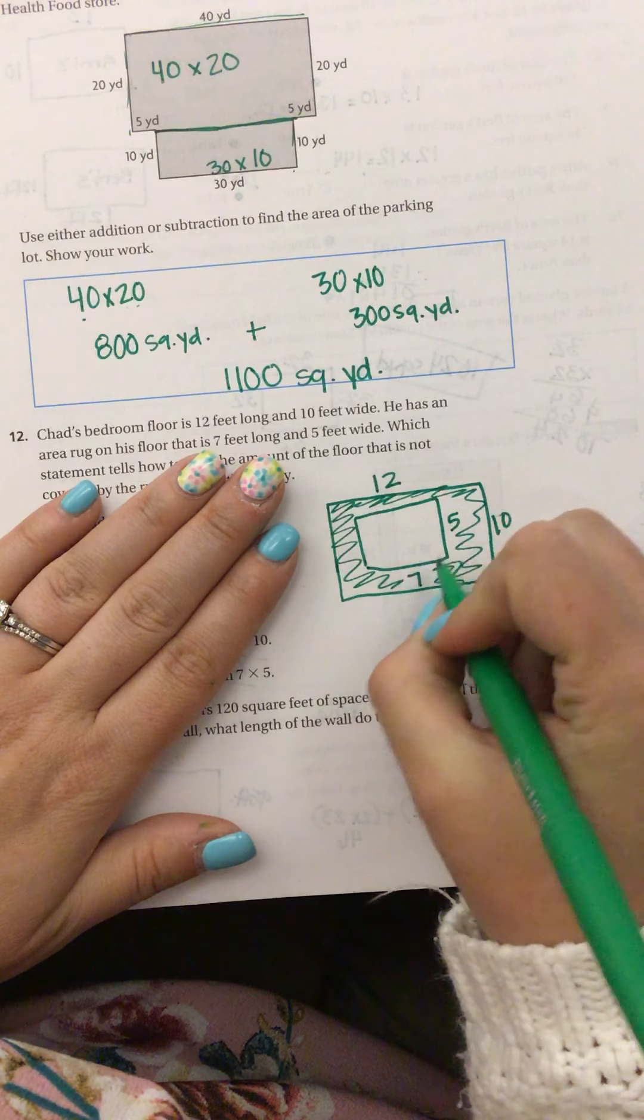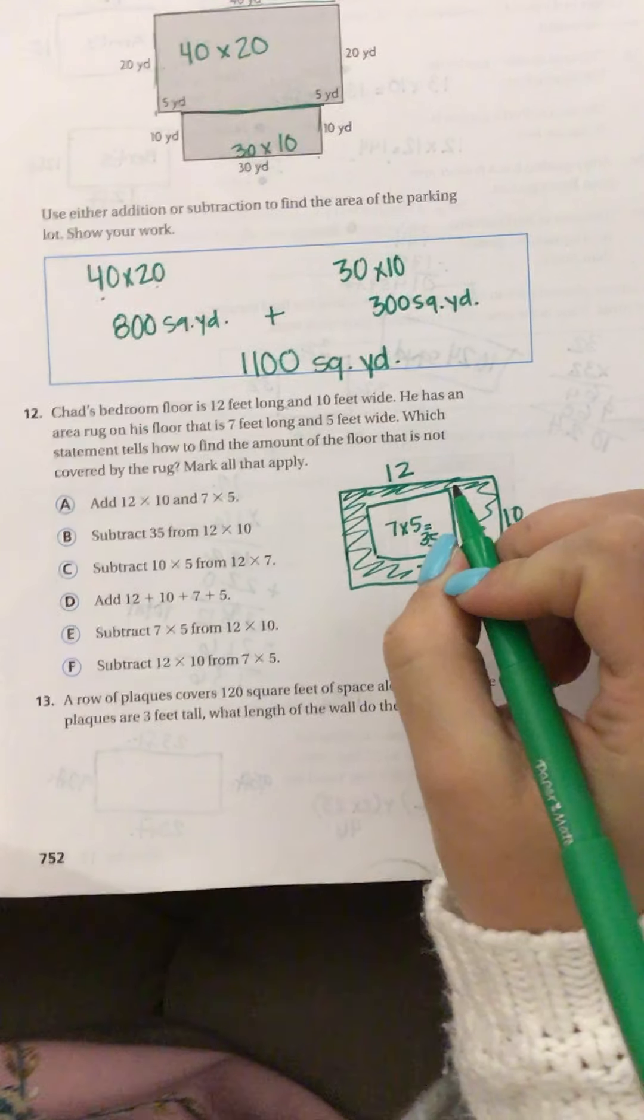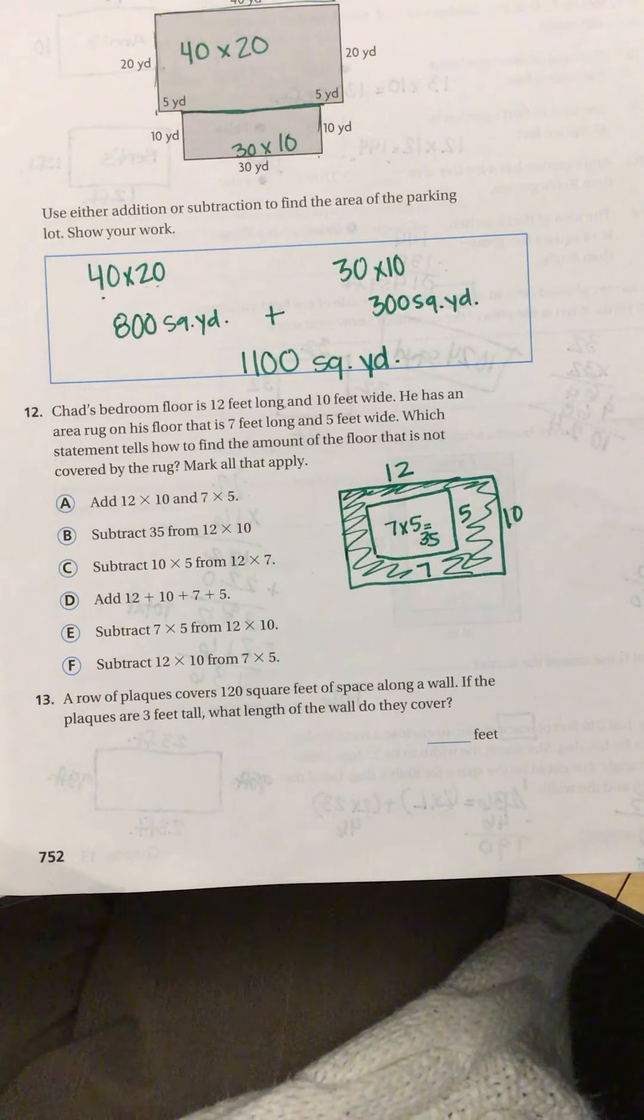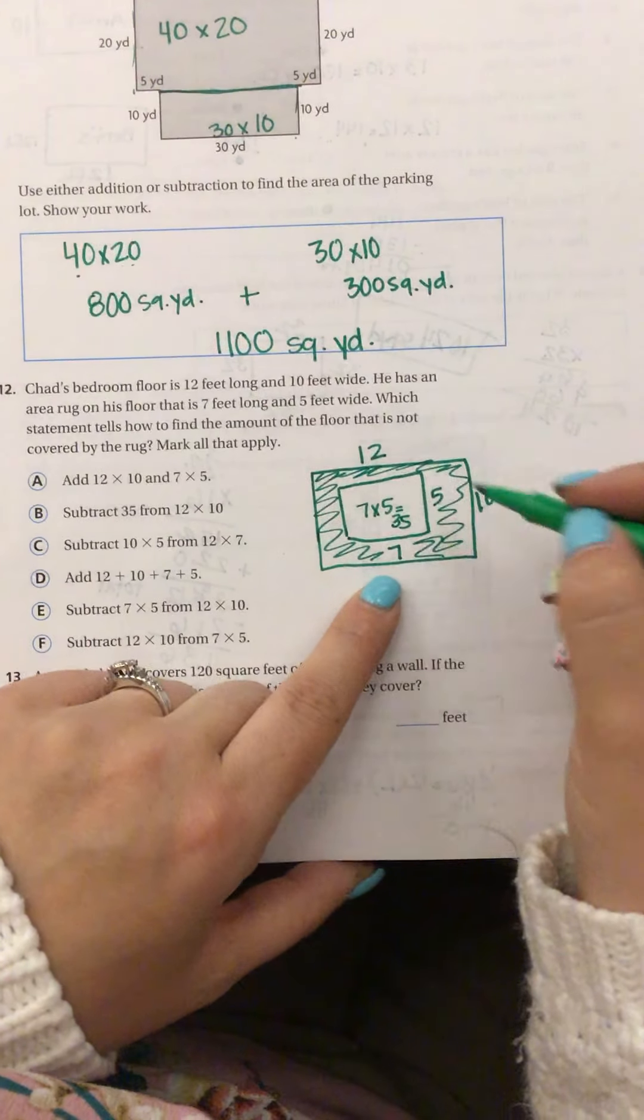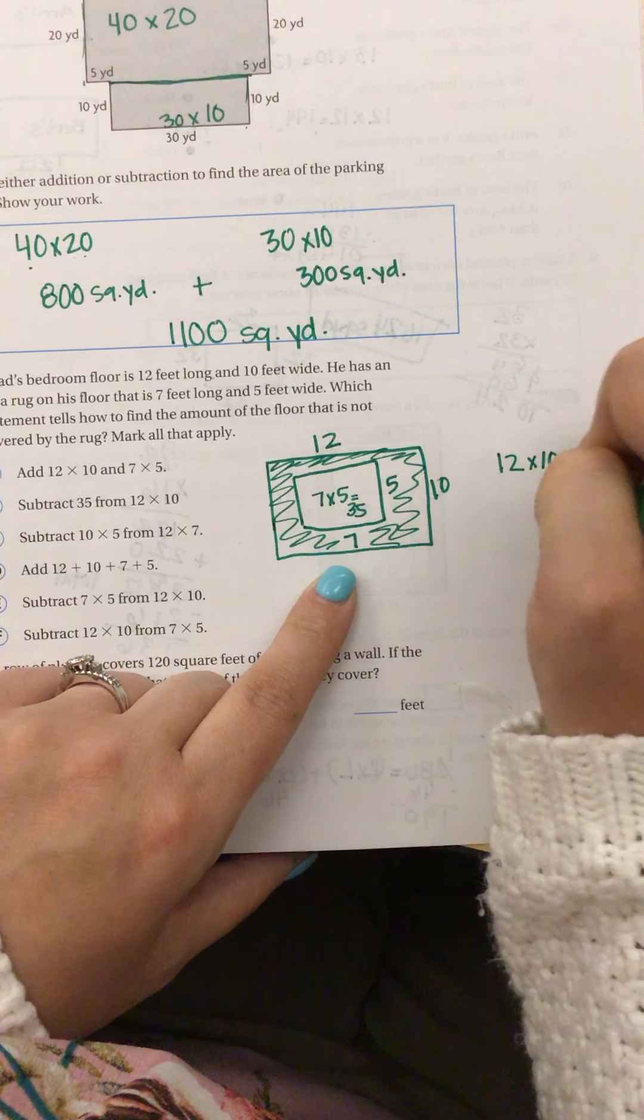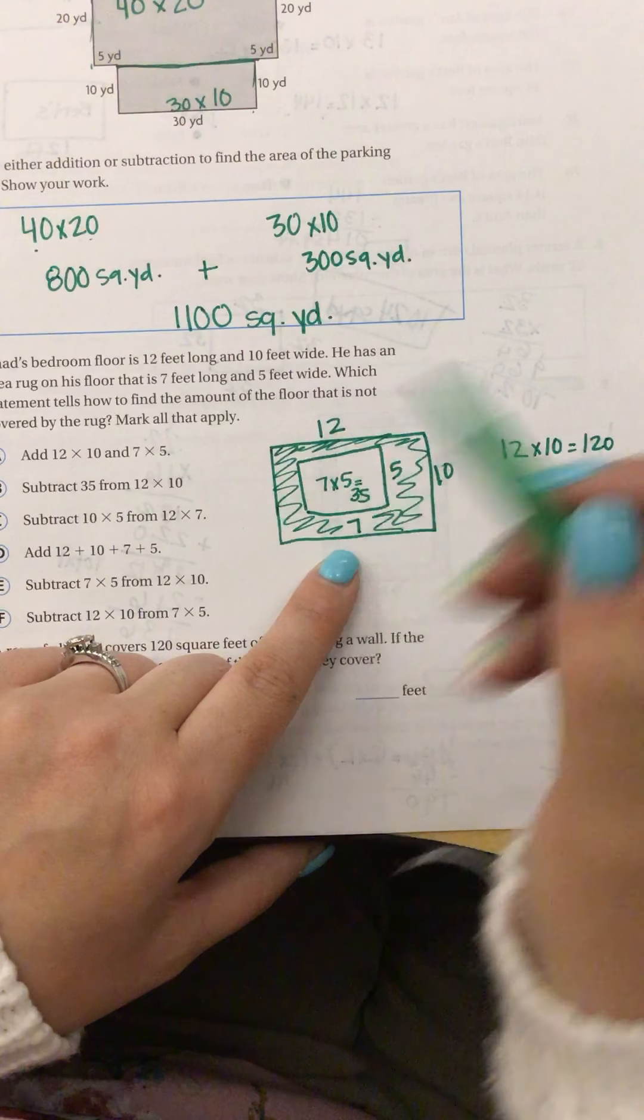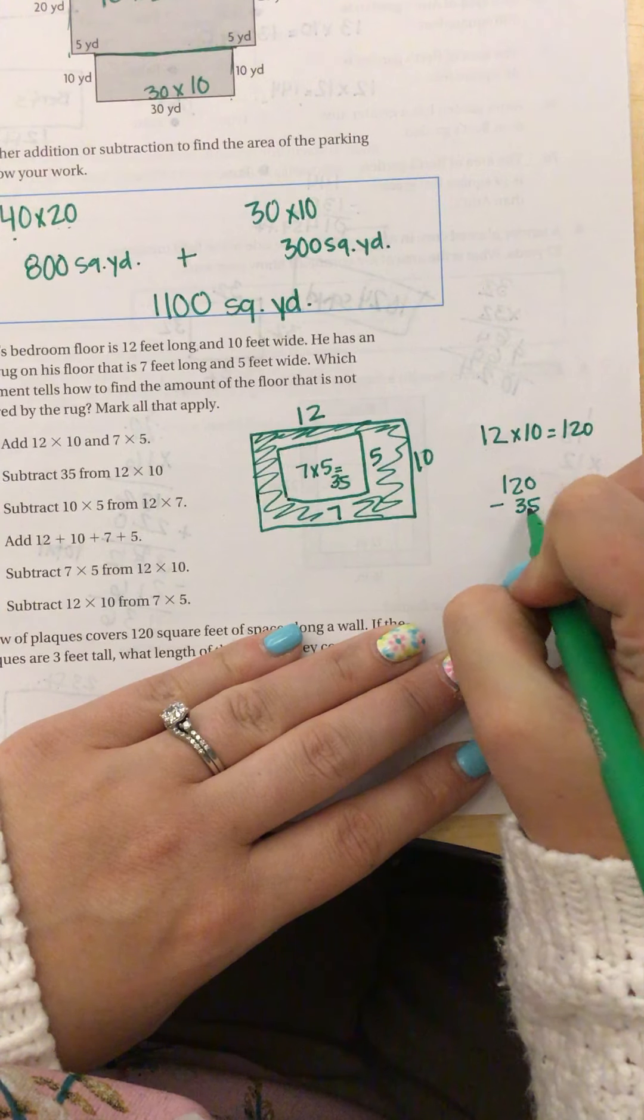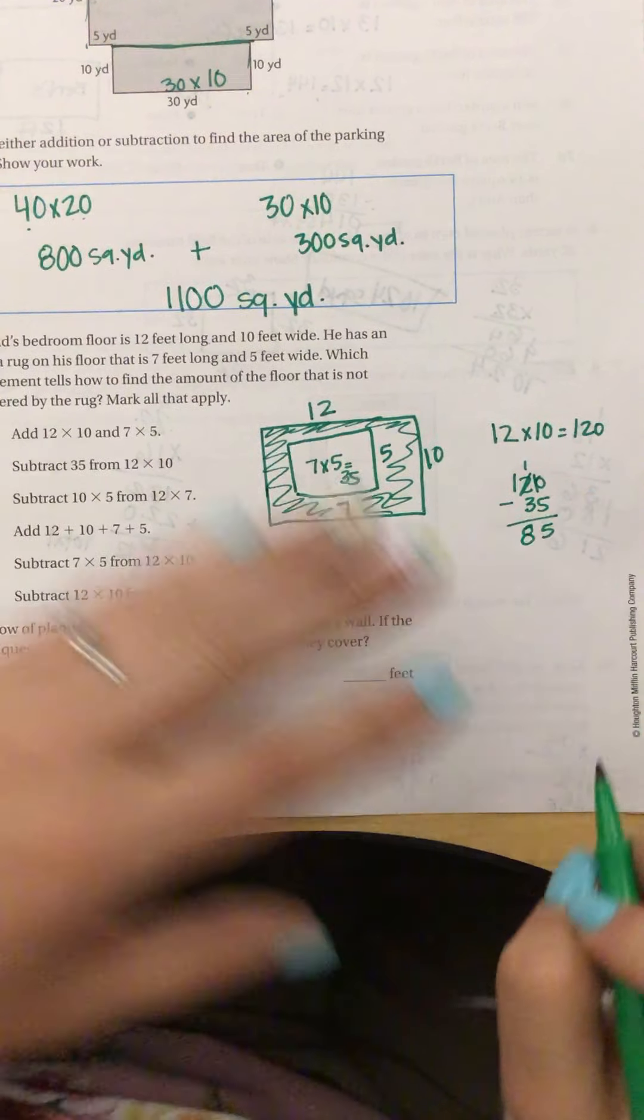So to find the area of the rug, 7 times 5 is 35. To find the area of the entire room, I do 12 times 10, which is 120. Now I know in order to find the area that I need, I would do 120 subtract 35. And when I do that, I get 85.